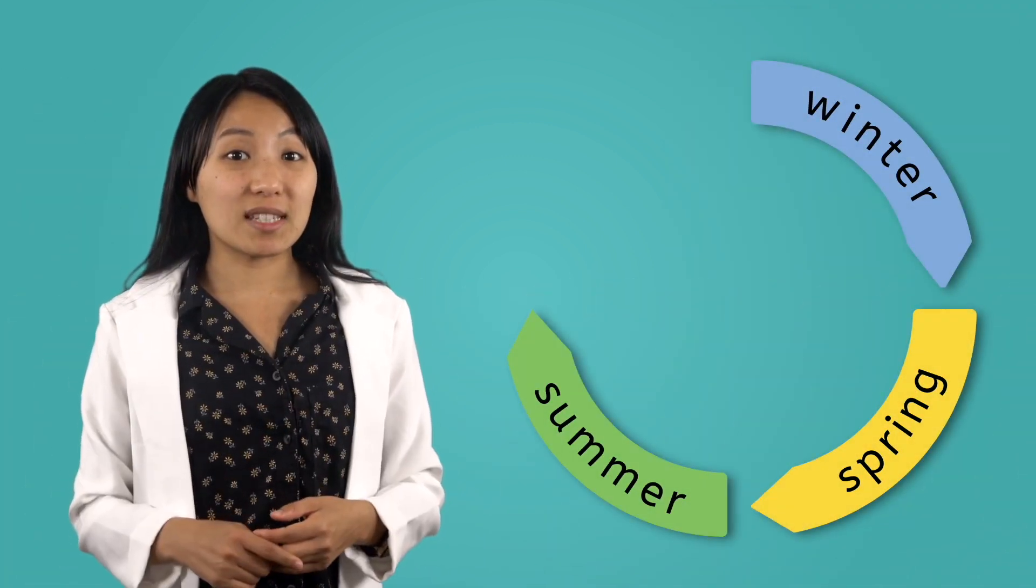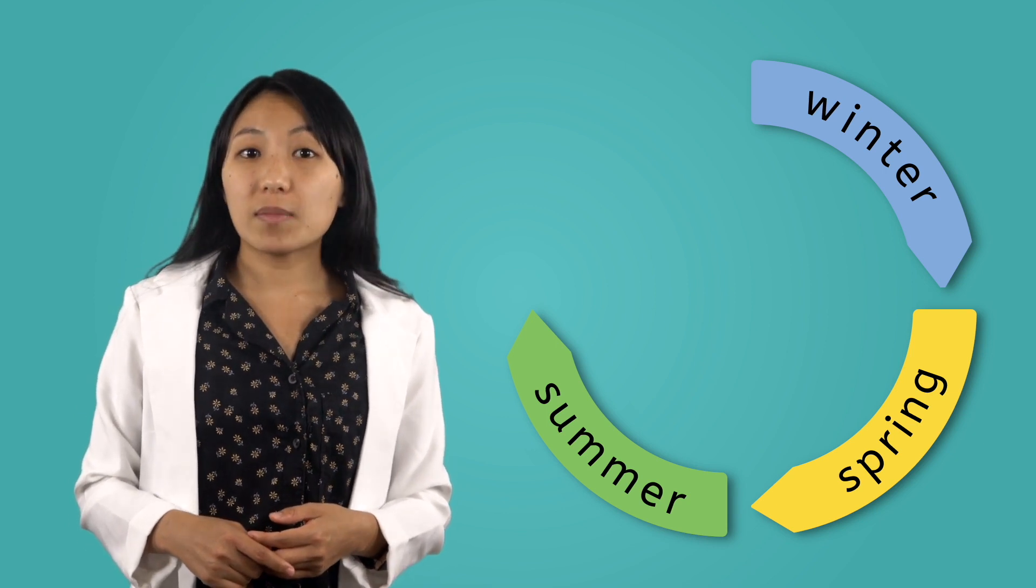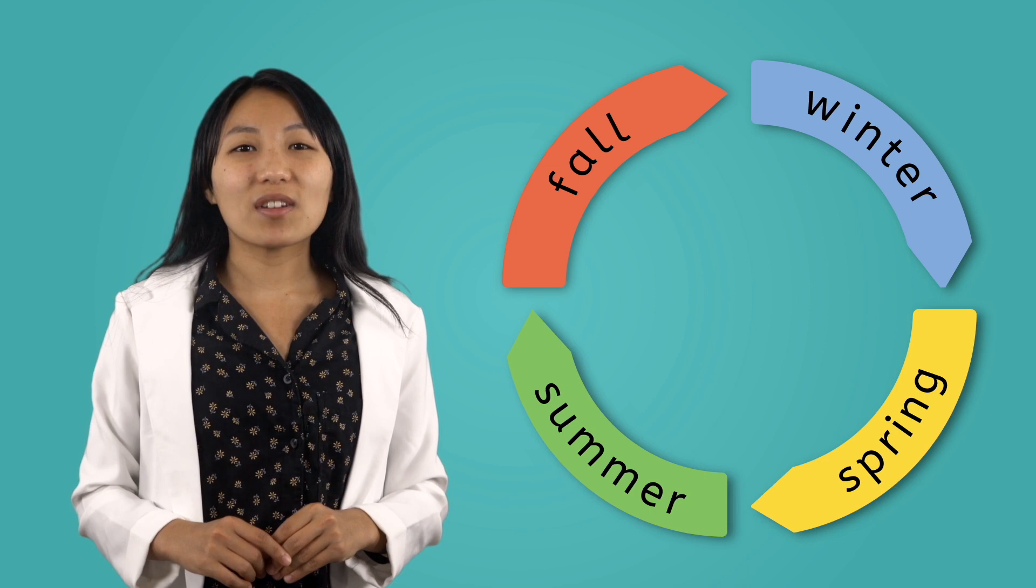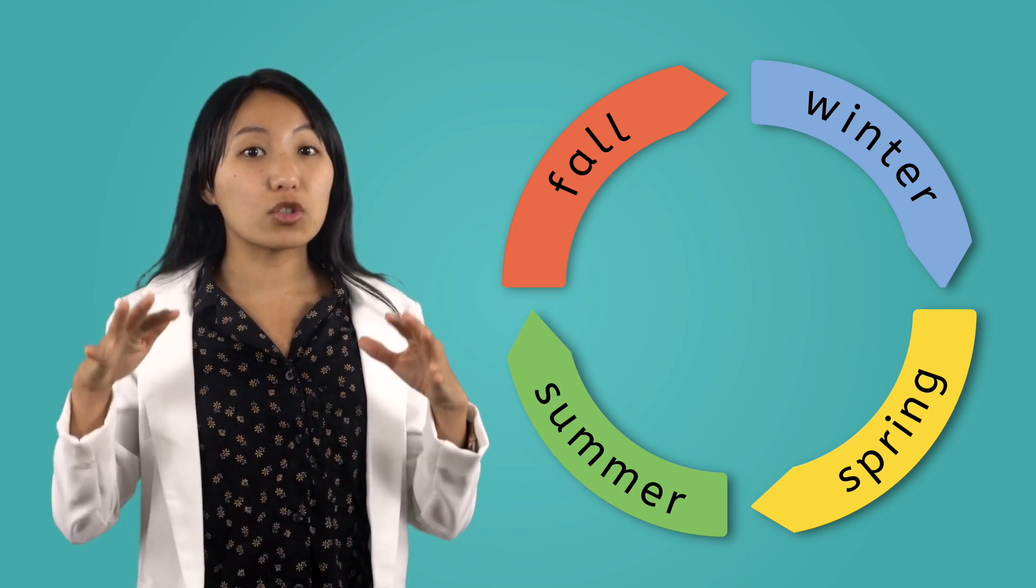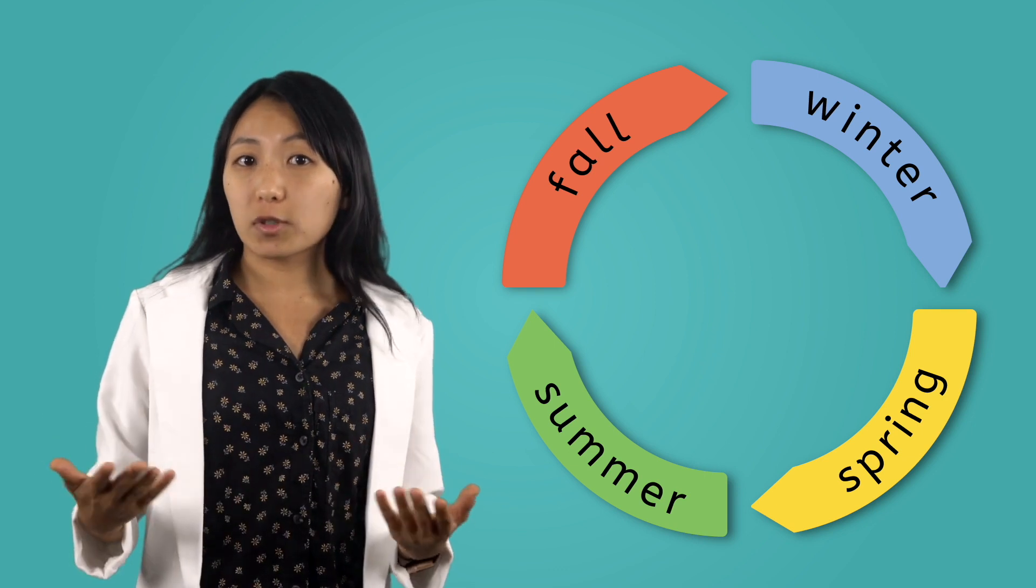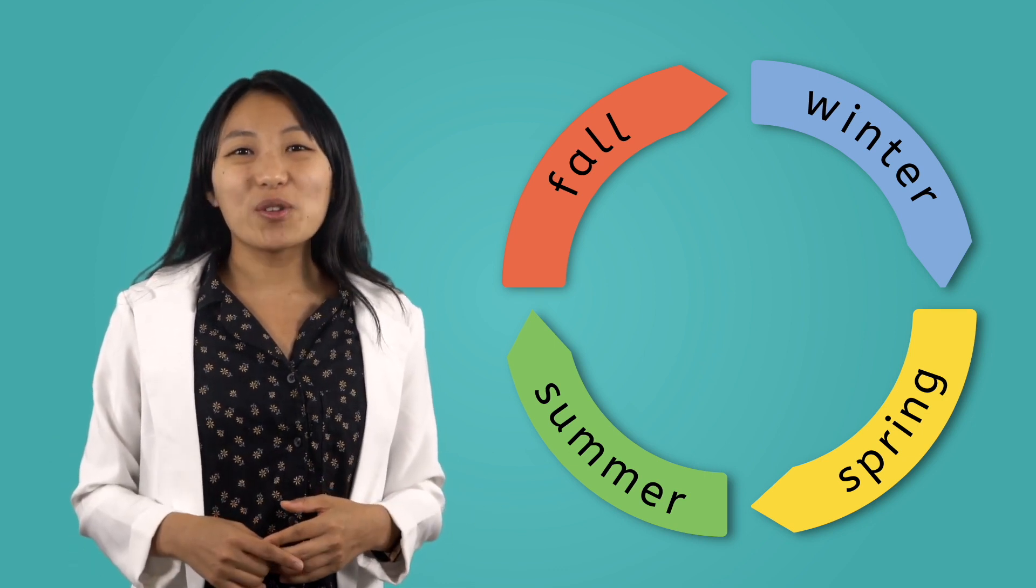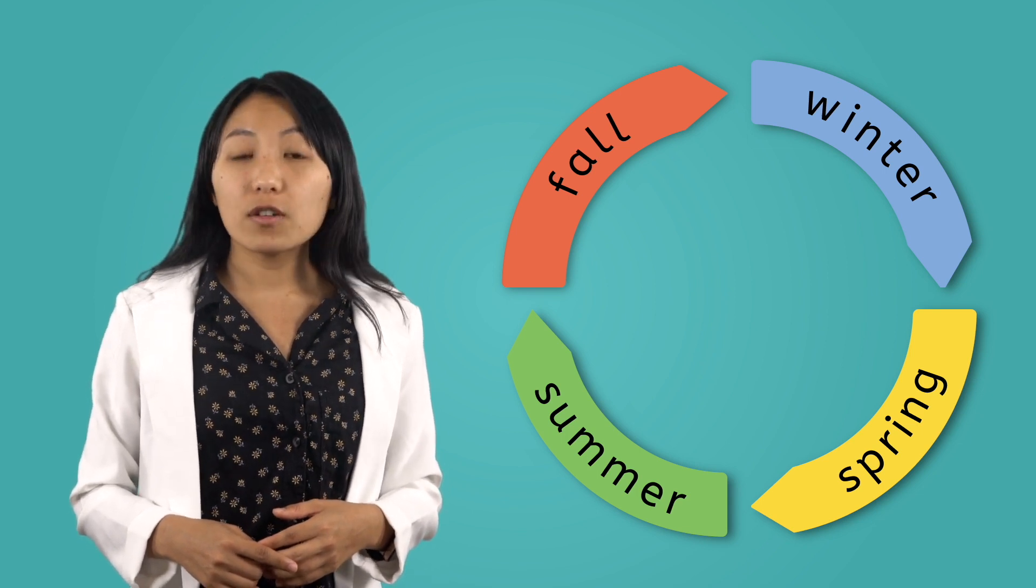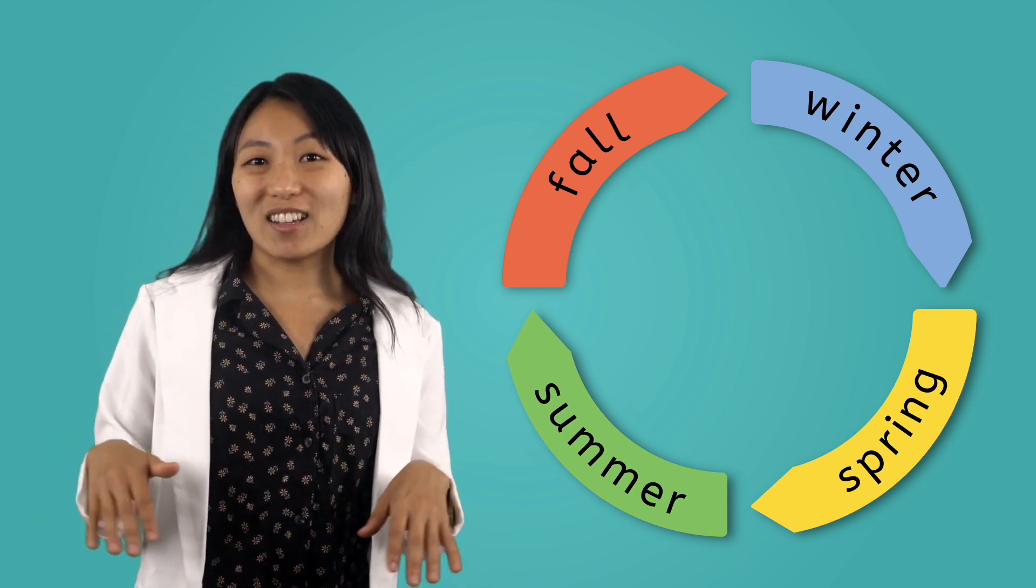Once the summer days begin to get shorter and cooler, that means the transition to fall is beginning. As the fall months arrive, you will notice the temperatures begin to lower. Fall is cooler than summer, but still warmer than winter. It will also be much drier than springtime. In the fall, people enjoy spending time outside on picnics, visiting pumpkin patches, and even going apple picking!